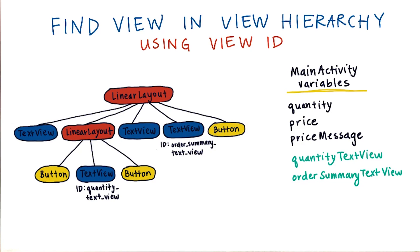And how do we make the connection between order summary text view here and this text view? Back in the layout XML file, remember that we assigned view IDs to certain views? For this text view, we gave it a view ID of quantity text view. For this view, we gave it an ID order summary text view.